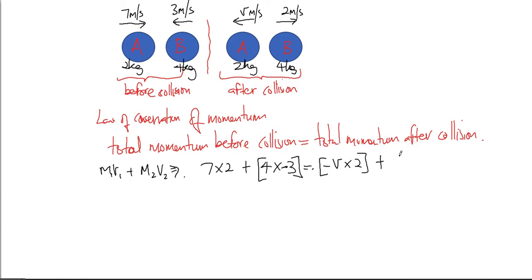Now let's solve this. 14, 4 times by minus 3 which is negative 12, equals negative 2v plus 8. And this should be 2 equals negative 2v plus 8.